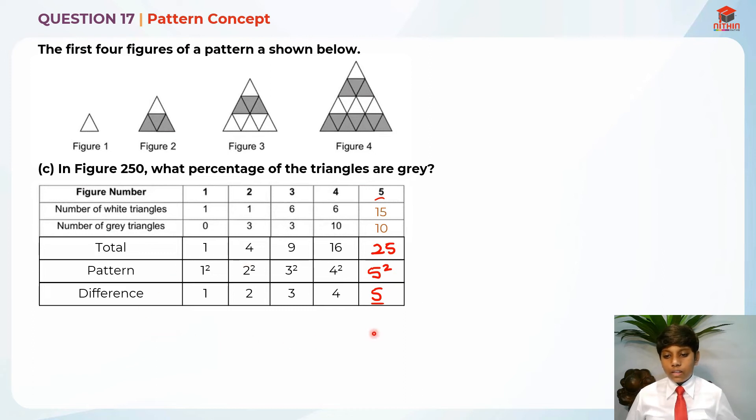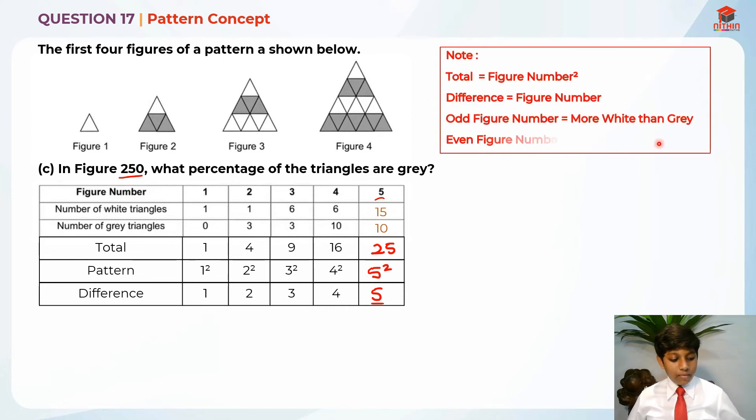So now that you figured out this, there's actually another thing that you realized. For odd figures, there's actually more white than gray triangles. And for even figures, there's actually less white and more gray triangles. See? Odd, more white and less gray. Even, more gray and less white. And they are asking in figure 250, what percentage of the triangles are gray? So in figure 250, what is figure 250? Is it even or odd? It's even, right? So there's actually more gray than white. So I'm going to write this note of all the patterns that we have found so far. Total is equal to figure number squared. Difference is equal to figure number. Odd figure number is equal to more white than gray. Even figure number is equal to more gray than white.